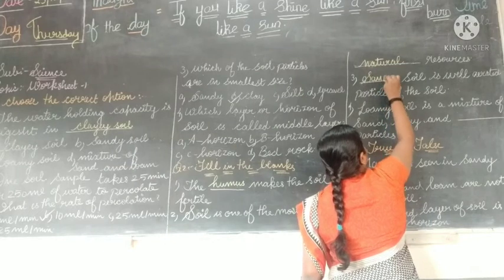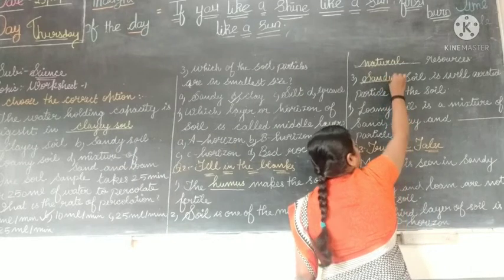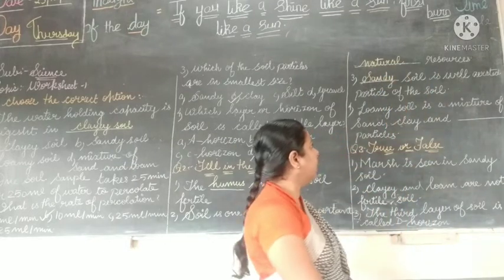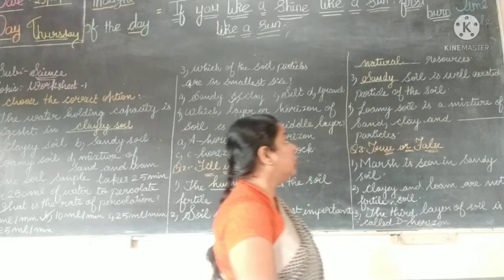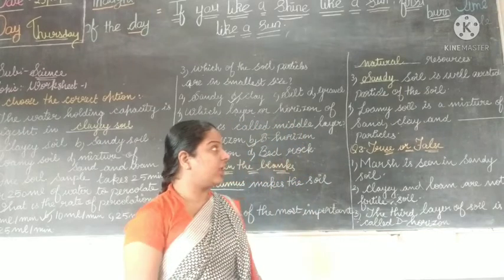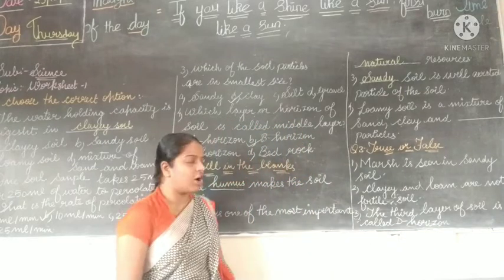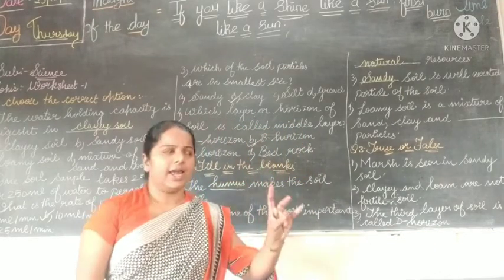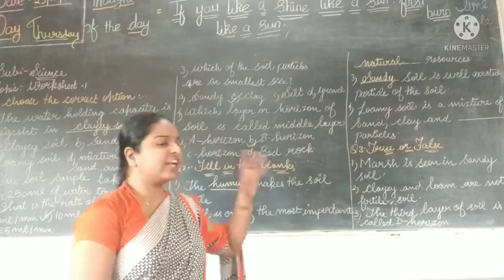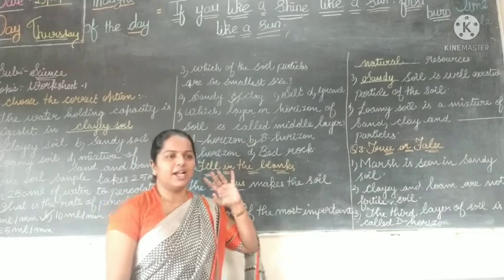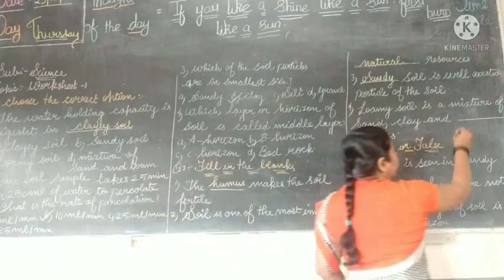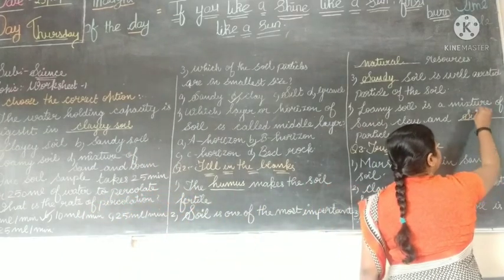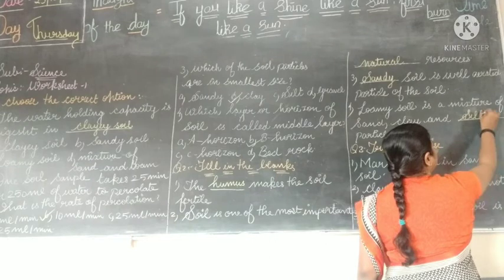Sandy soil is well aerated. You have to write sandy soil. Loamy soil is the mixture of sand, clay, and blank particles — the answer is silt particles.